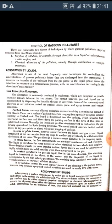Gas absorption is commonly conducted in equipment which is designed to provide intimate contact between the two phases. The contact between gas and liquid can be accomplished by dispersing the liquid in the gas or vice versa. Some of the commonly used absorbers in air pollution control are packed towers, plate towers, spray towers, and venturi scrubbers.